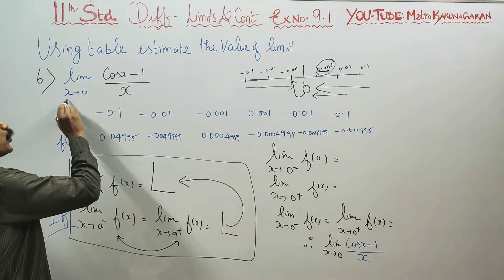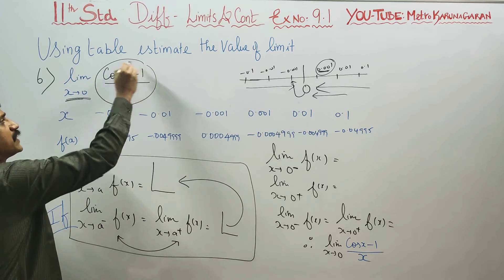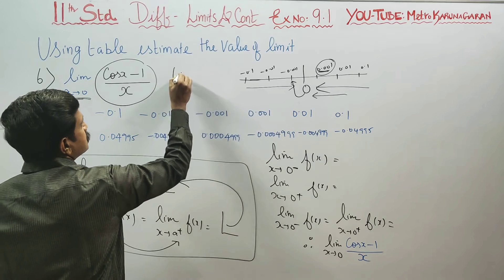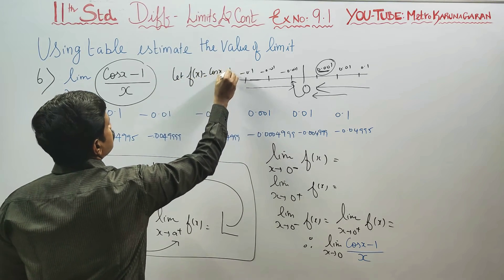When x approaches 0, what is the value of the function cos x minus 1 by x? Let us choose f of x equals cos x minus 1 by x.